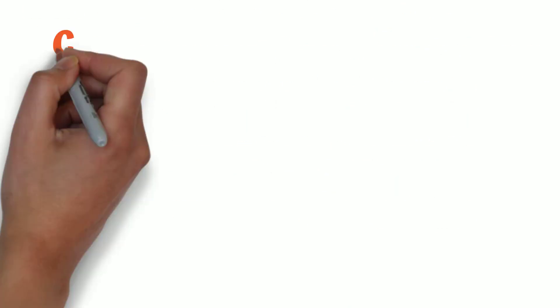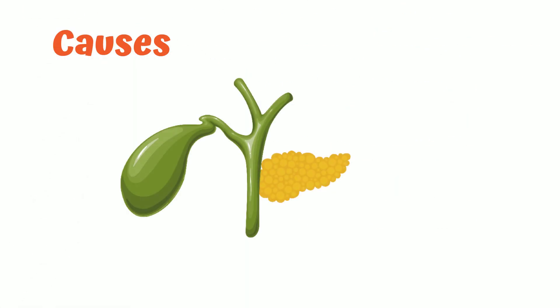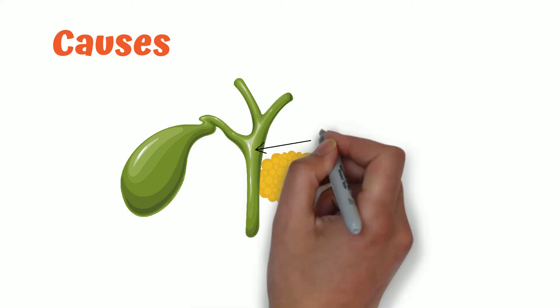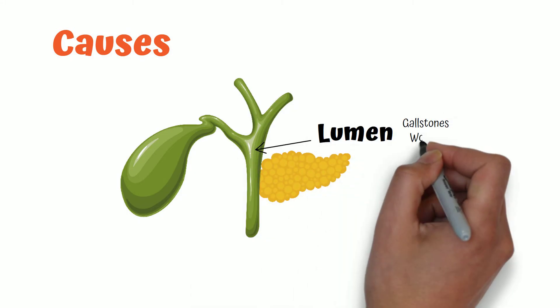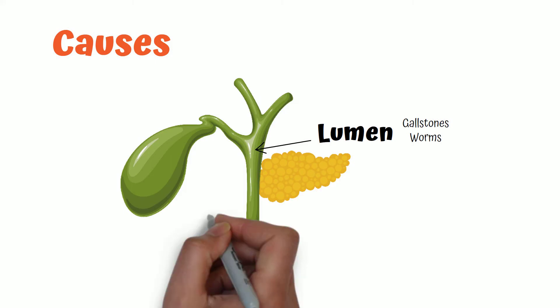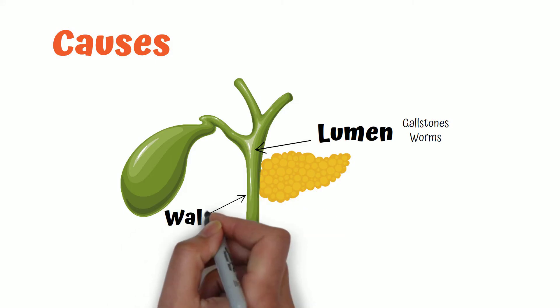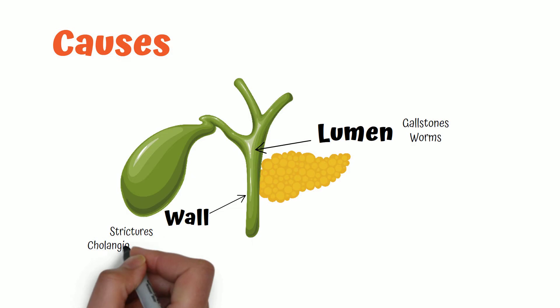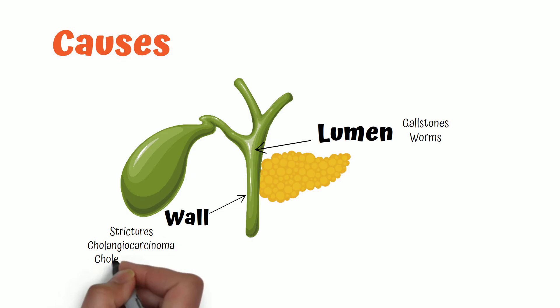What are the causes of obstructive jaundice? The jaundice can be from three areas. It can be from the lumen, such as gallstones or worms. It can be from the wall, like a stricture from surgeries, a cholangiocarcinoma, or a choledochal cyst.